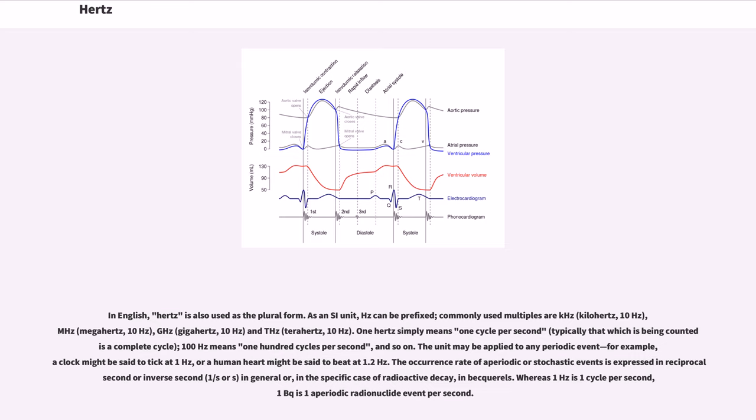As an SI unit, Hz can be prefixed. Commonly used multiples are kHz (kilohertz, 10³ Hz), MHz (megahertz, 10⁶ Hz), GHz (gigahertz, 10⁹ Hz), and THz (terahertz, 10¹² Hz).